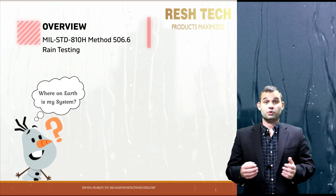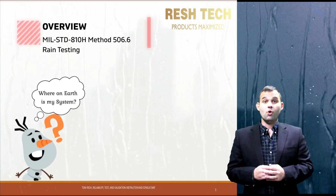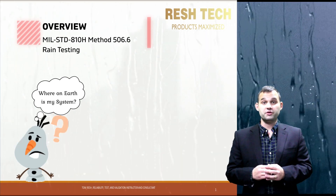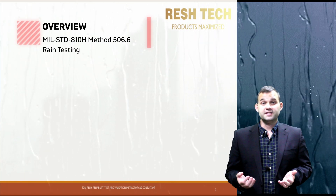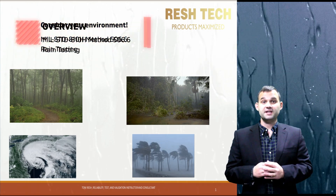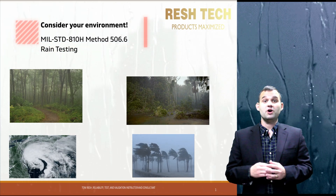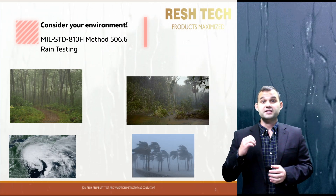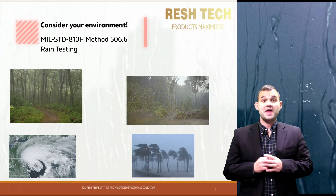As you are well aware, depending on where a system is used or deployed, it will impact the type of weather conditions it will need to hold up against. For instance, in a tropical region such as the South Pacific, a system will encounter heavy rainfall, blowing rain, and other moisture environments such as humidity, which we will cover in the next video.